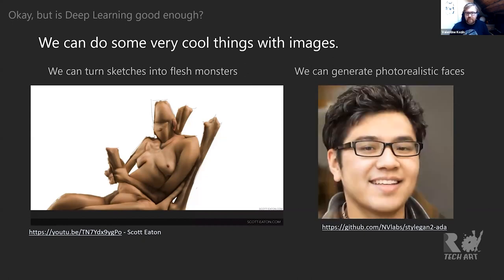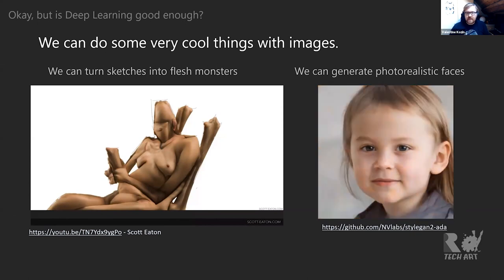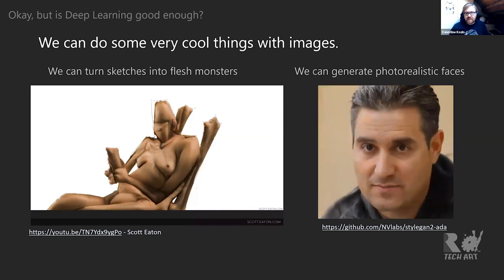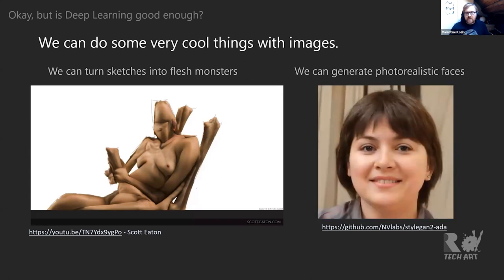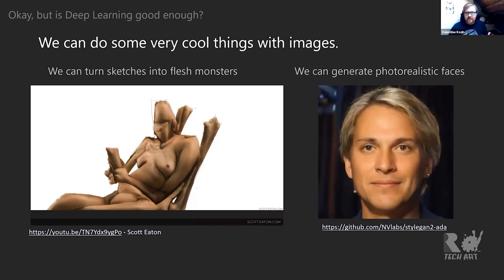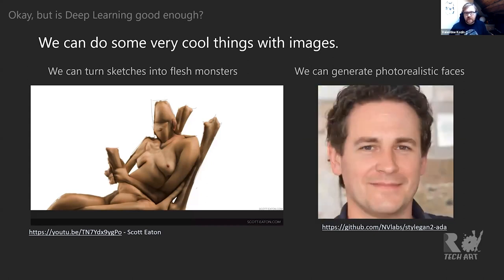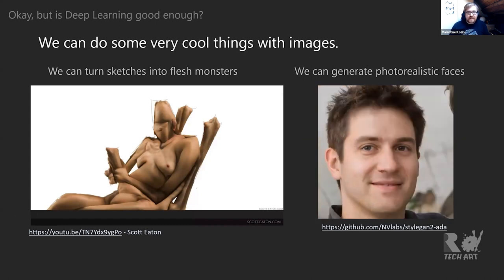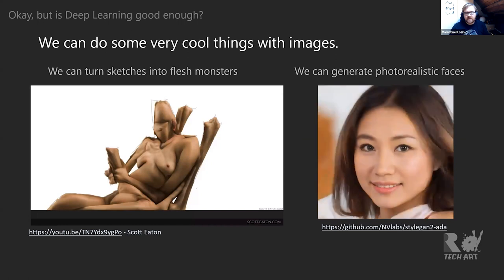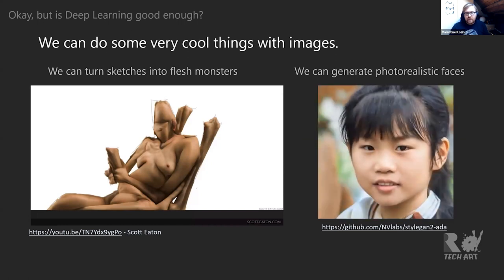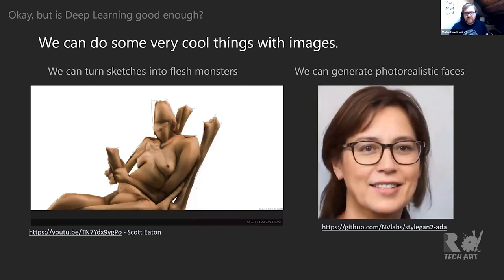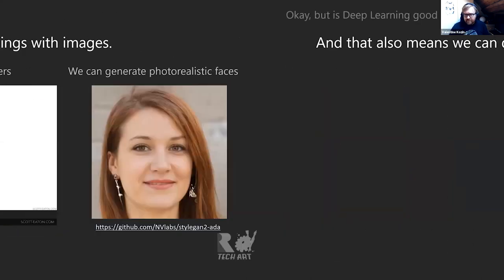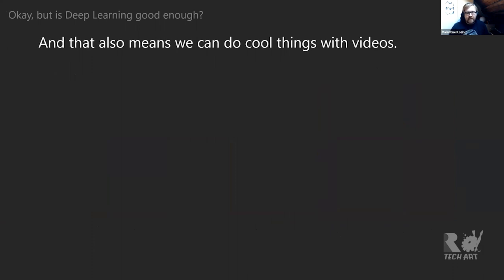We can generate photorealistic faces — for example, with NVIDIA's model called StyleGAN, which is able to create stunning amounts of diversity and has lots of parameters for controlling what kinds of faces you want to make. It can be trained on different domains: cars, lions, horses, and so on. It's doing this at 1024 by 1024 — the limitation is mostly just training time and VRAM. A lot of this stuff is indistinguishable from real photos unless you really know where to look.